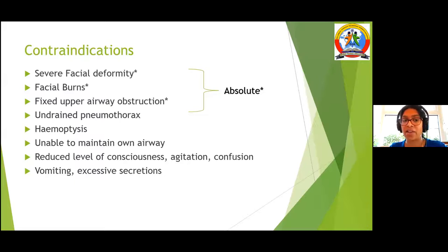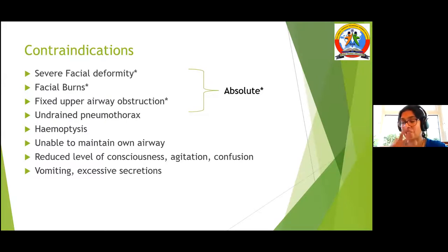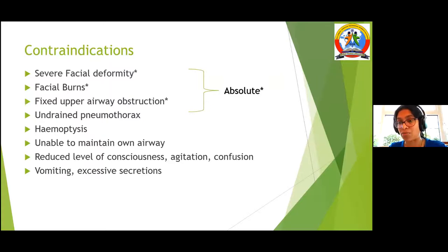When would you not consider NIV? Contraindications include facial deformities, burns, upper airway obstruction, pneumothorax, hemoptysis, inability to maintain their own airway due to low GCS, vomiting, or excessive secretions. If patients are vomiting with positive pressure applied, they are very likely to aspirate. Consider placing an NG tube, especially in elderly patients, to prevent gastric bloating and aspiration.